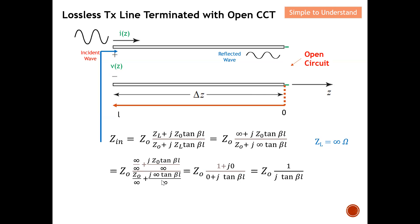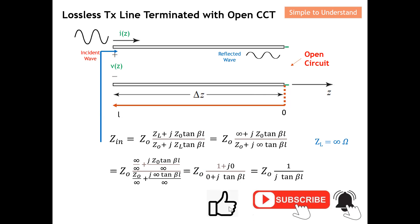What I want to do is divide all terms by infinity. As you can see, infinity divided by infinity equals one. Any finite number divided by infinity is essentially zero, so Z₀ divided by infinity becomes zero. The two infinity terms cancel each other. Simplifying, the zero terms drop out and I arrive at this equation. This is the input impedance for an open-circuit termination at the load side. So this is the Z_in value.